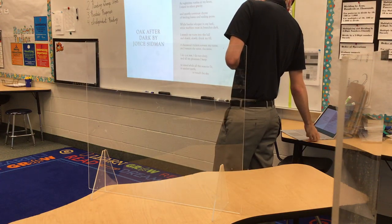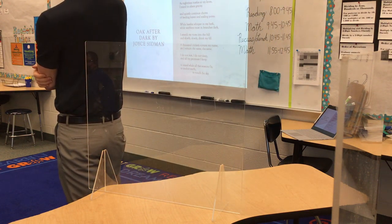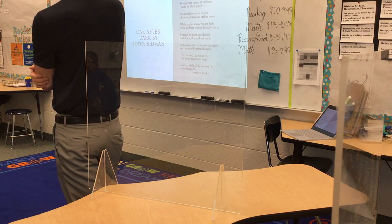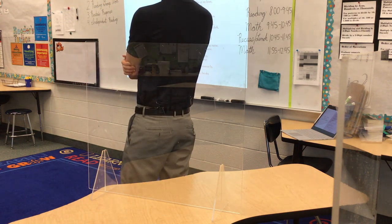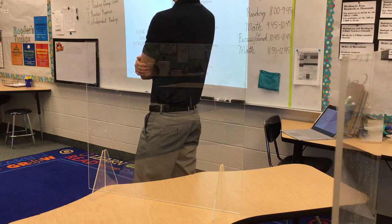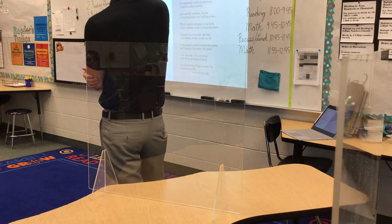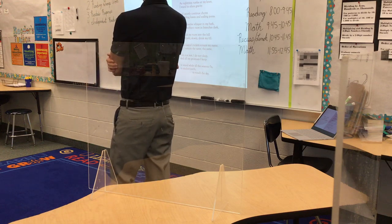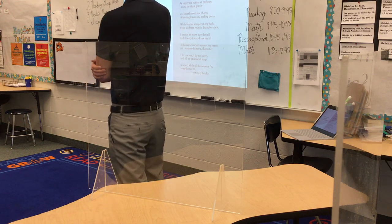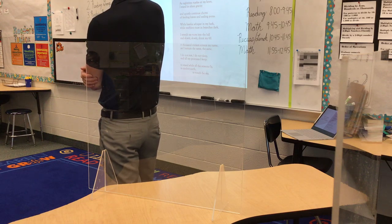Let's go ahead and look at a poem first. This poem is called 'Oak After Dark' by Joy Sidman. As nighttime rustles at my knee, I stand in silent gravity and quietly continue chores of beating leaves and sealing pores. While beetles whisper in my bark, while warblers roost in branches dark, I stretch my roots into the hill and slowly, slowly drink my fill. A thousand crickets scream my name, yet I remain the same, the same. I do not rest, I do not sleep, and all my promises I keep. To stand while all the seasons fly, to anchor earth, to touch the sky.